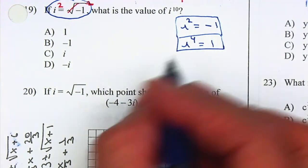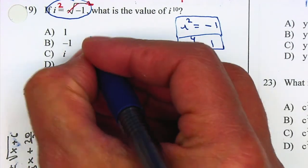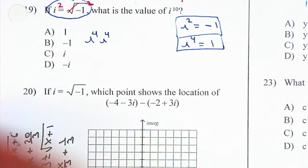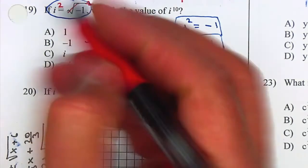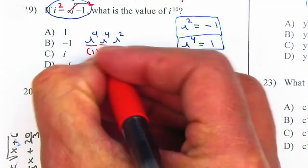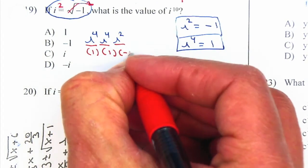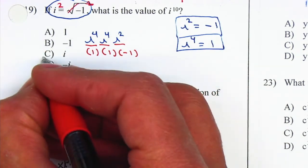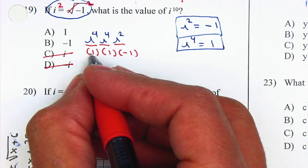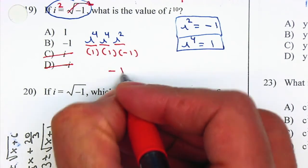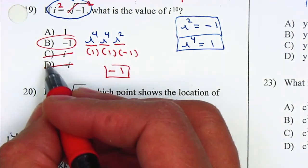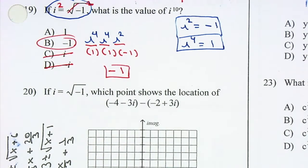i to the 10th — how many i to the 4th do we have? Two. How many i's are left? Two. i to the 4th is 1, i to the 4th is 1, and i squared is negative 1. Notice that there are no i's left by themselves, so C and D are not the answer. Multiply 1 times 1 times negative 1, your answer is negative 1. So your answer is D.